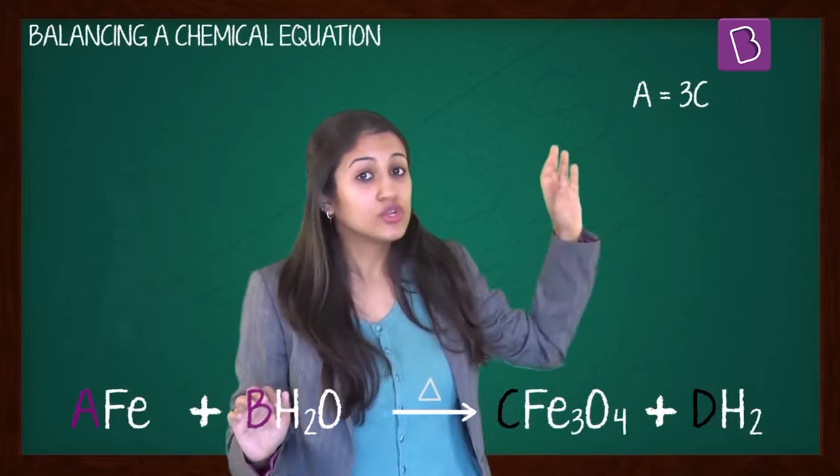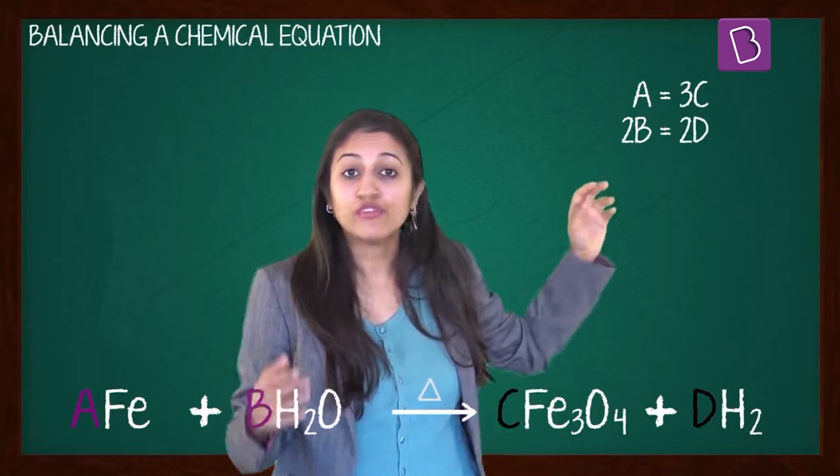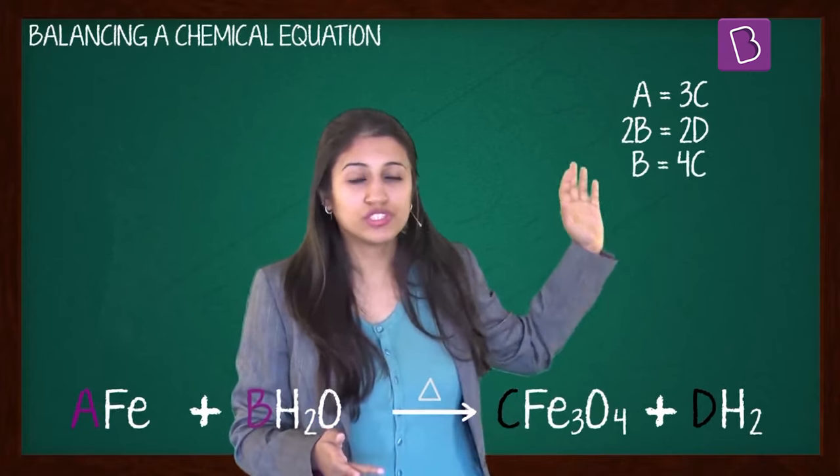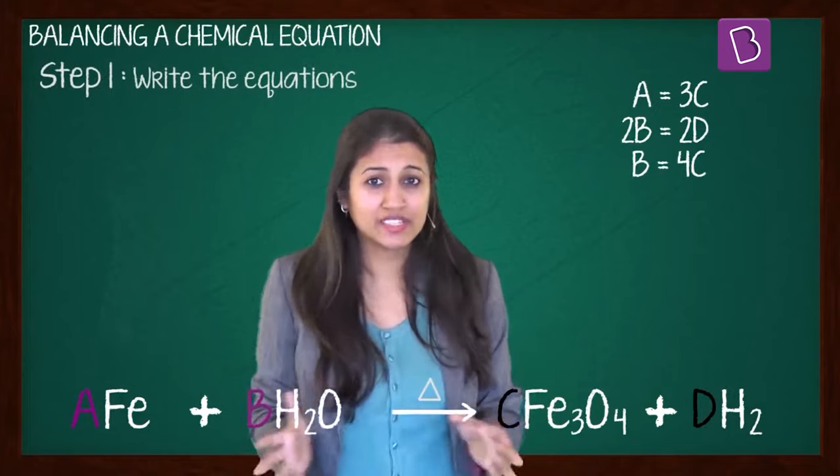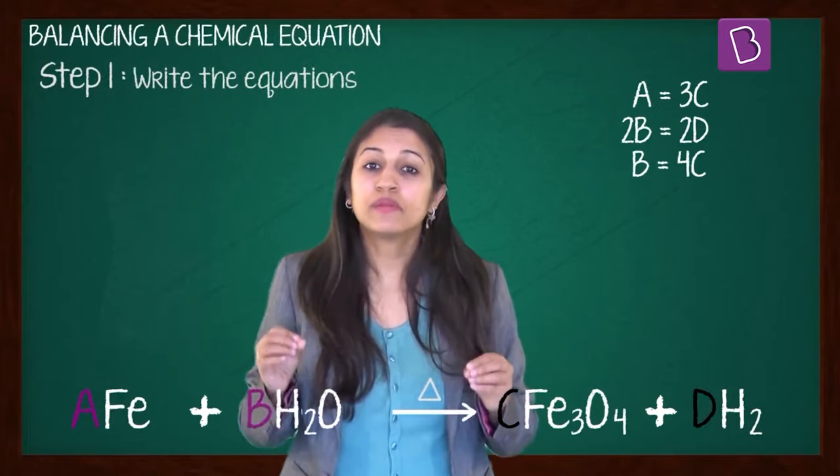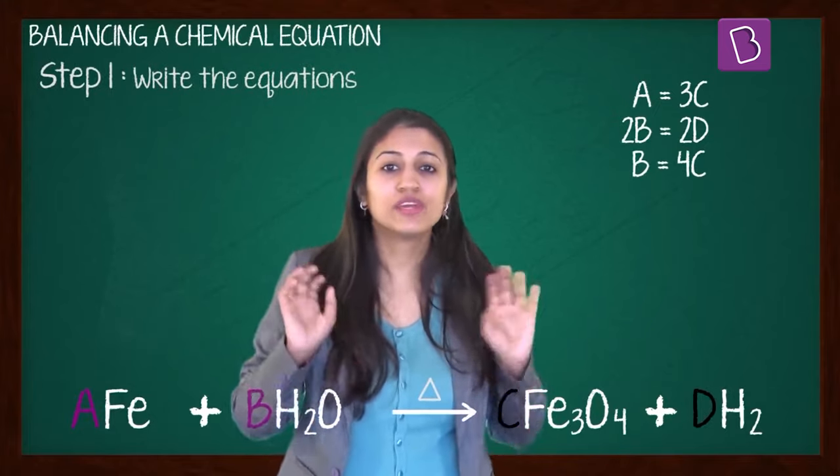In the same way for hydrogen, if I compare, I'll get 2B is equal to 2D. And for oxygen, I will get B is equal to 4C. Now step 1 was to actually write it this way. Show the number of elements present in the product and the reactant side in the equation.